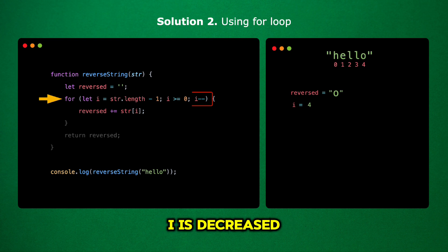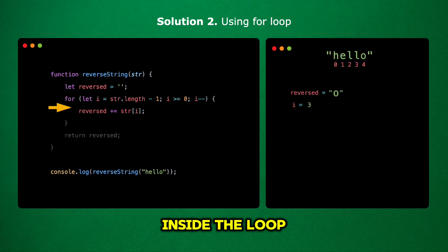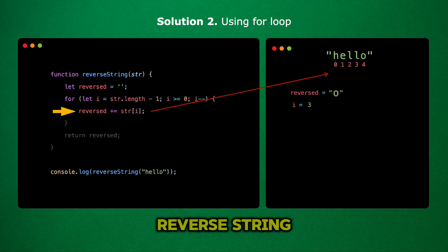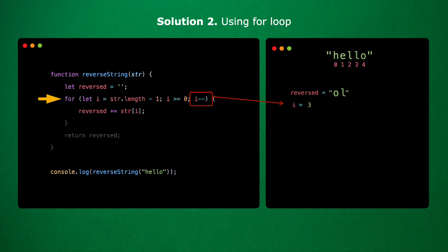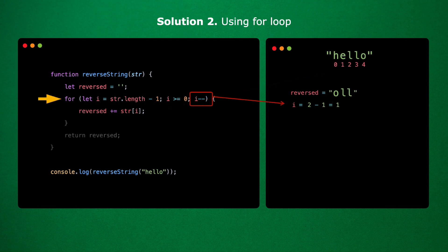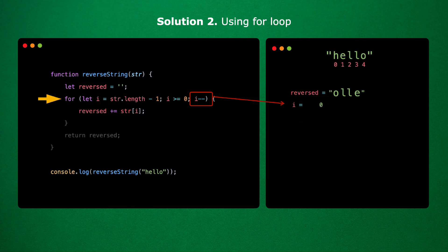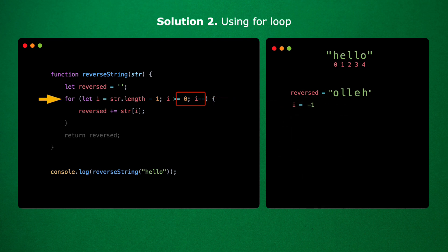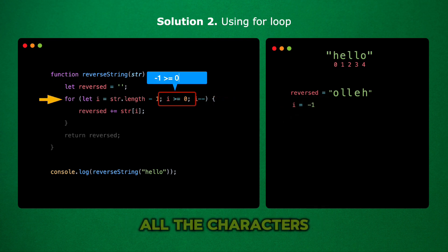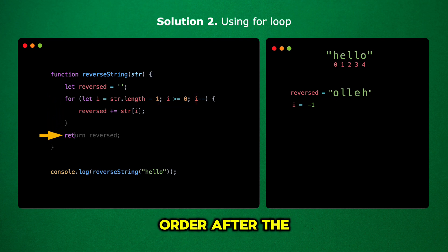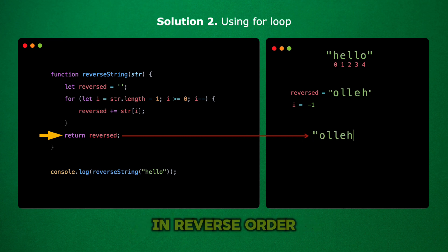After each loop iteration, i is decreased by one. This moves us from the current character to the previous one in the string. Inside the loop, we add the character at the current index i to the reversed string. By the time the loop finishes, 'reversed' will contain all the characters from the original string but in reverse order. After the loop, we return the reversed string, which now contains the original string in reverse order.